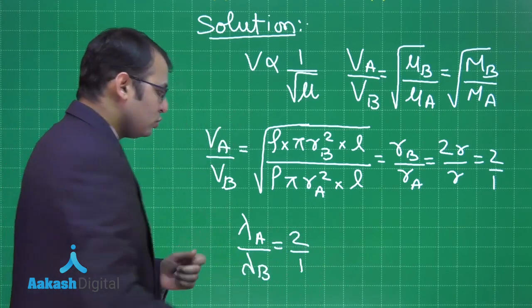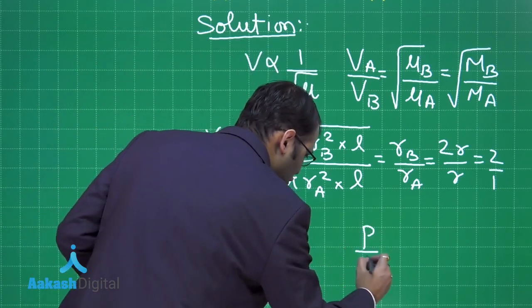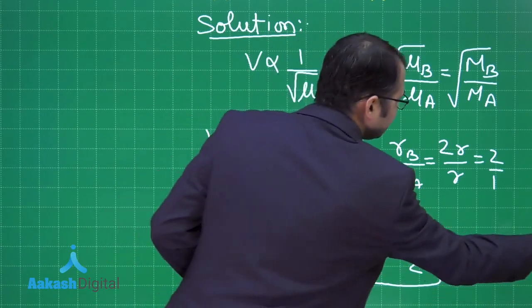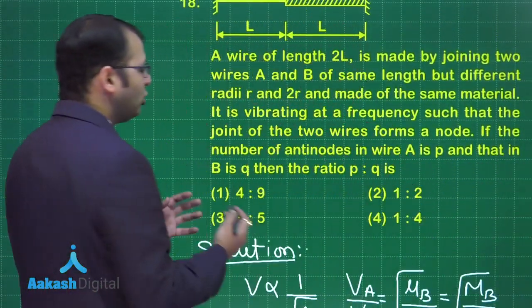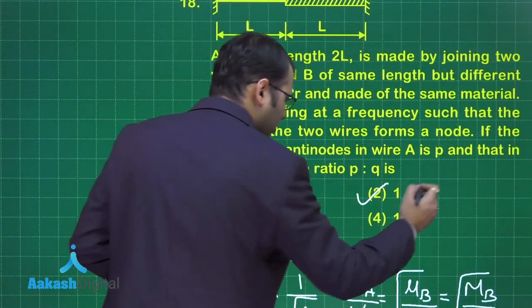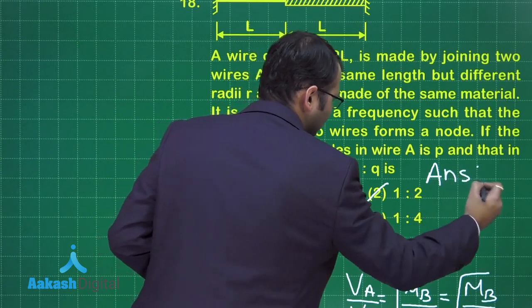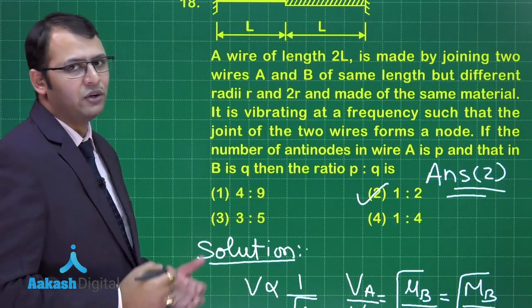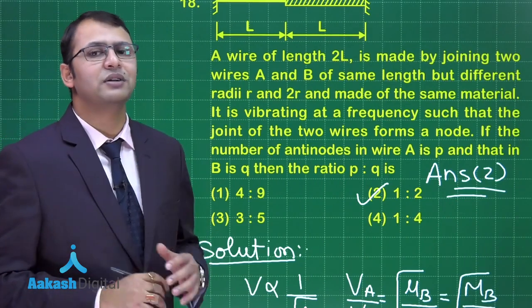Now since they are equal to 2 is to 1, so P is to Q will be equal to 1 is to 2. Let's see which is the best suited option here. Among the four options given, option number 2 would be the right answer. I hope you have understood the question very well. Now let's take our next question, that is question number 19.